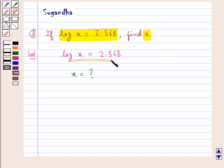Since log x equals 2.368, x would be given by the antilog of 2.368.